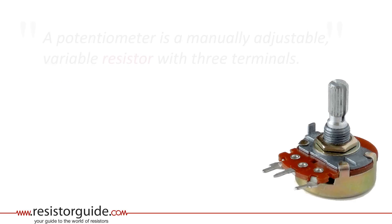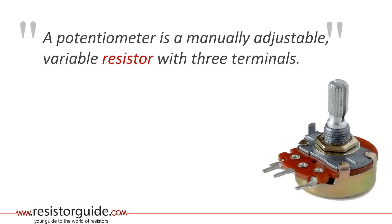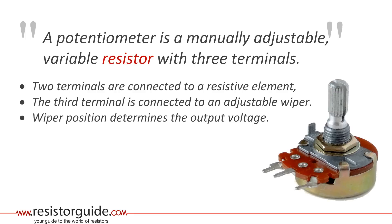A potentiometer, or even simpler pot, is a manually adjustable variable resistor with three terminals. To be more specific, two terminals are connected to the ends of a resistive element, and the third one is connected to a wiper that slides over the resistive element. Therefore the wiper position defines the output voltage.